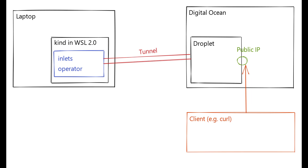We've come to the end of this video. We took a look at the inlets operator, which is a great solution whenever you want a real public IP for locally running Kubernetes services — think KinD on your laptop or desktop machine at home or at work. It provides this capability in a very simple way, as you've seen. If you have questions or remarks, leave them in the comments. Hope to see you in another video — bye bye and take care.